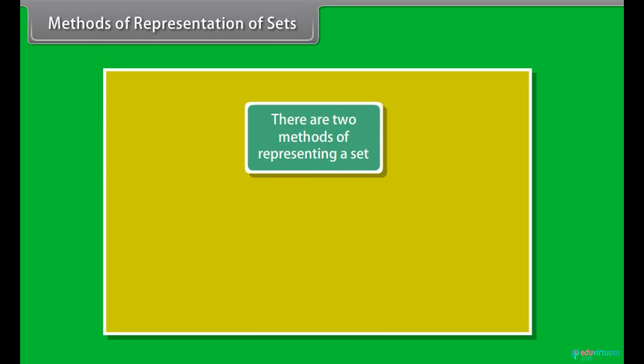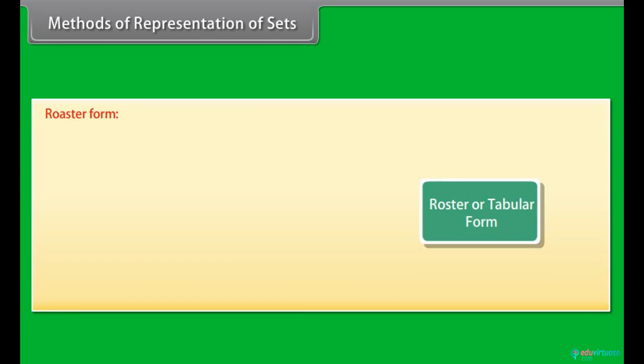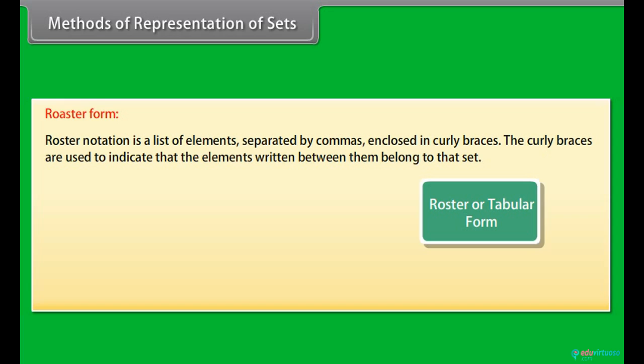Methods of representation of sets. There are two methods of representing a set: Roster or tabular form and set builder form. Roster form. Roster notation is a list of elements separated by commas, enclosed in curly braces. The curly braces are used to indicate that the elements written between them belong to that set.